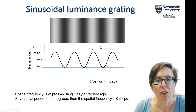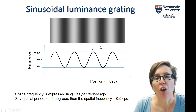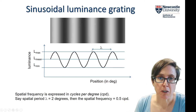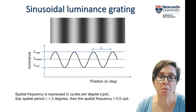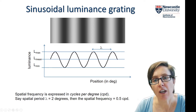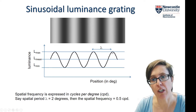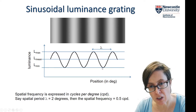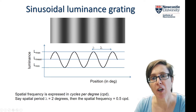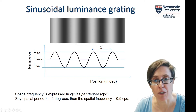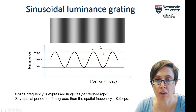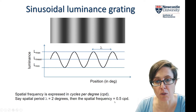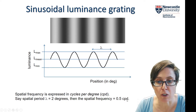Going back to our sinusoidal luminance gratings, when we assess their spatial frequency, we express that in the number of cycles per degree. Here is one cycle of the luminance grating — from light to dark and back to light again. That's one spatial period; I'll use the symbol lambda for that, which is traditional. If this particular lambda is two degrees, then the spatial frequency is 0.5 cycles per degree.